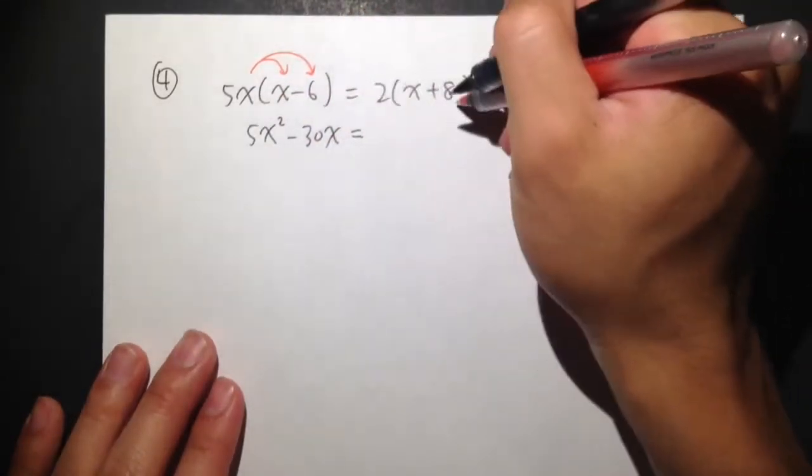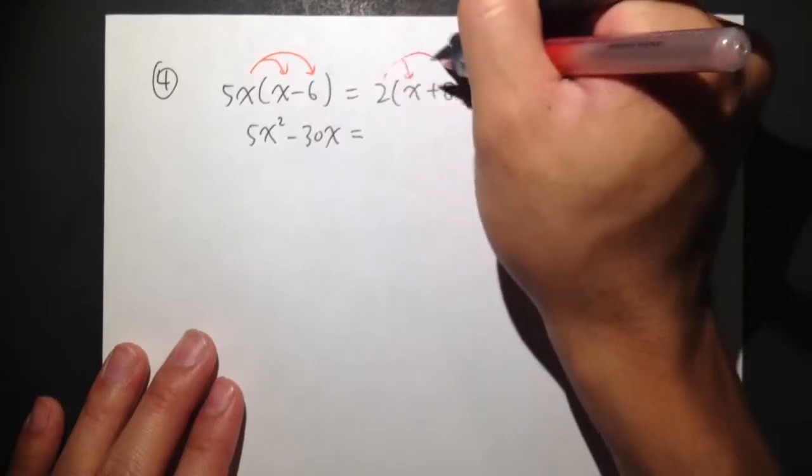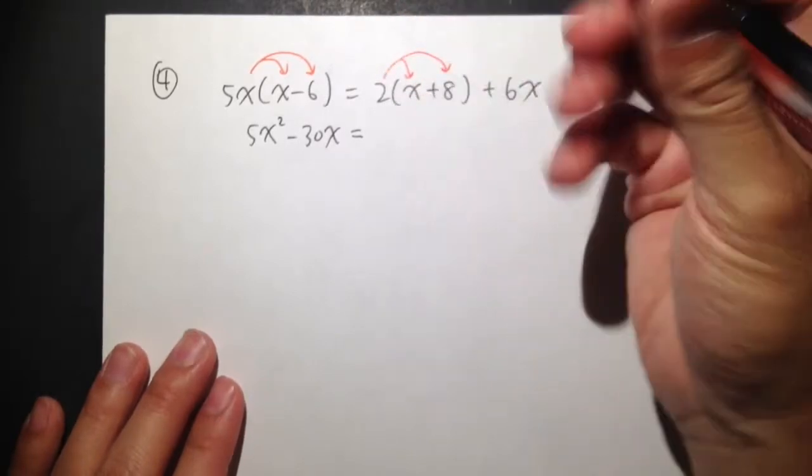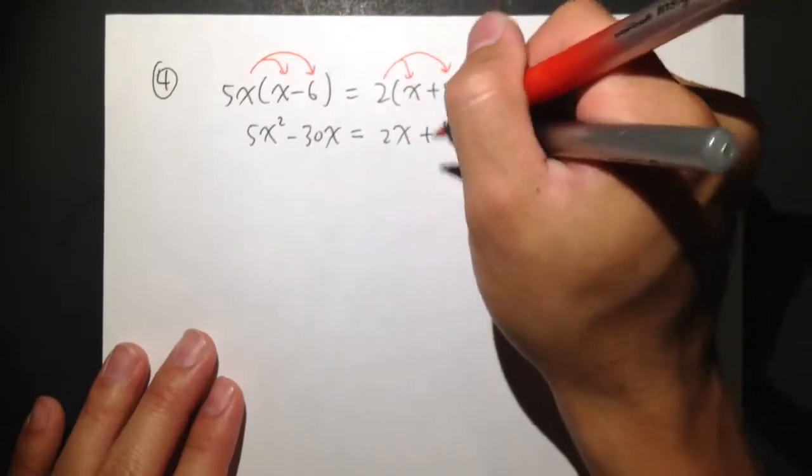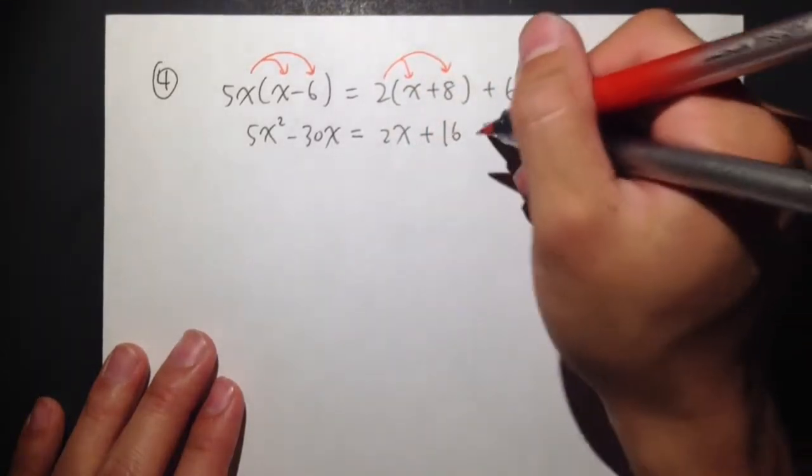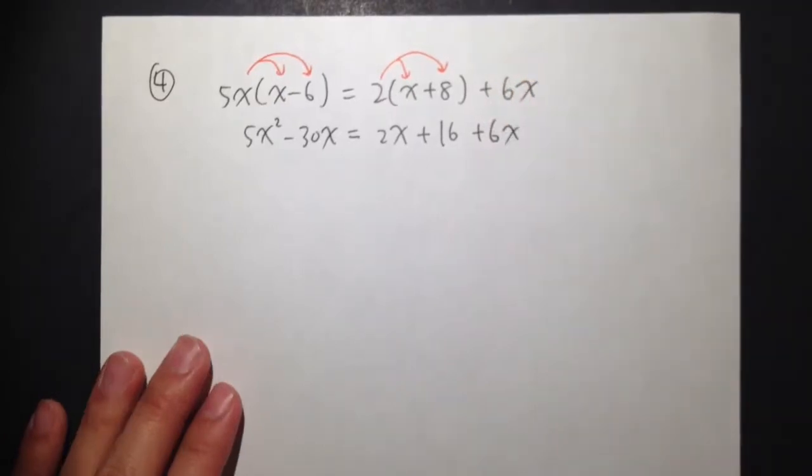Equals to, I have the 2 in front of this parenthesis, so I will do the same as well. 2 times x is just 2x. And then 2 times positive 8, that's plus 16. And also let me bring down the plus 6x.